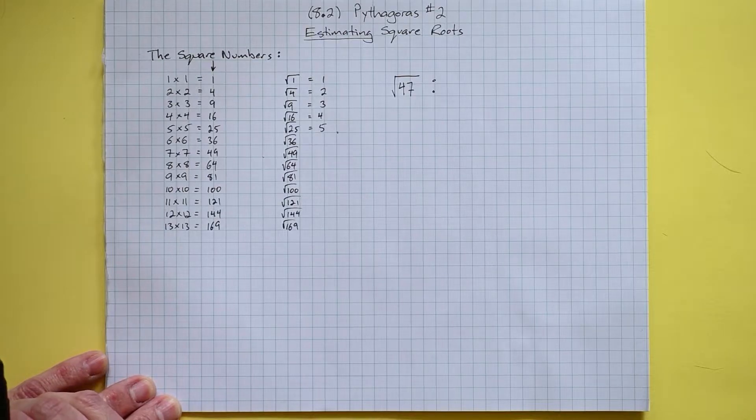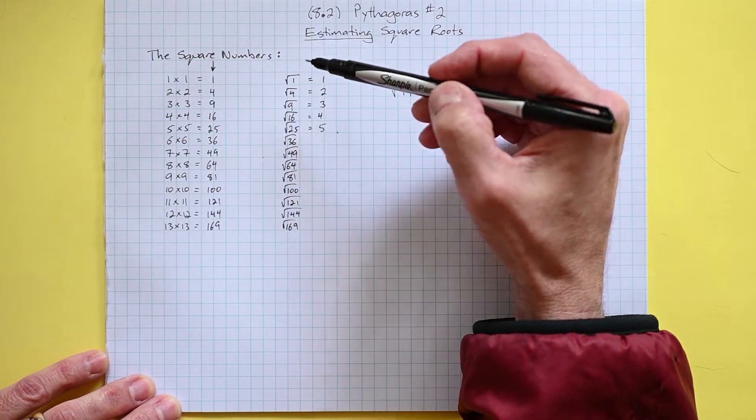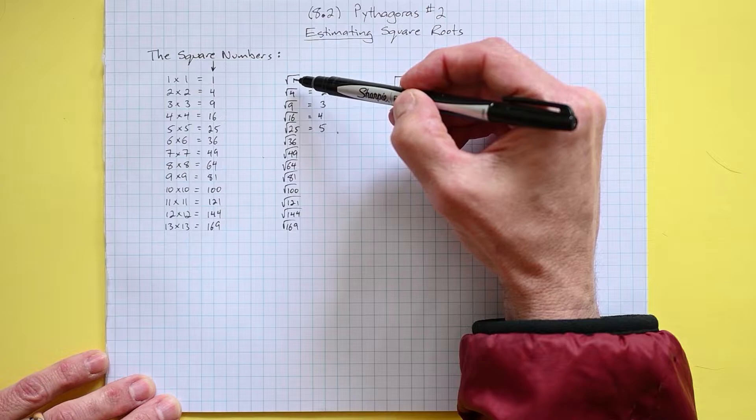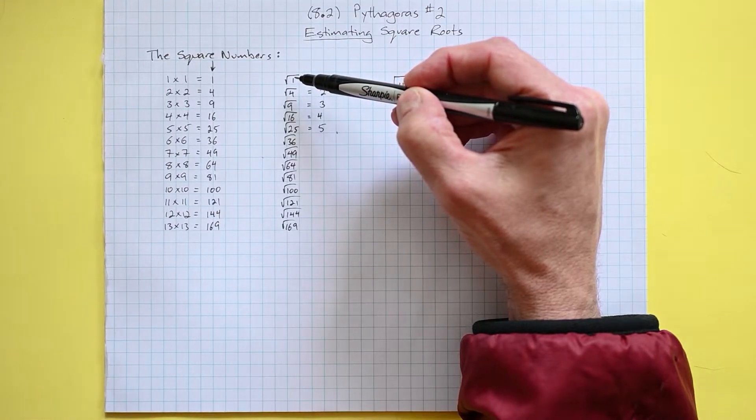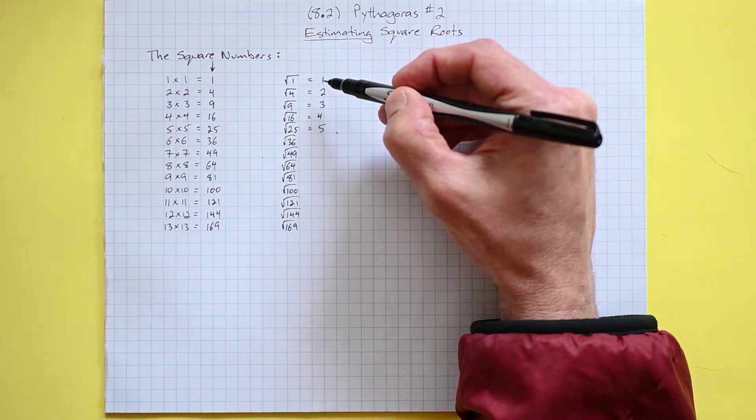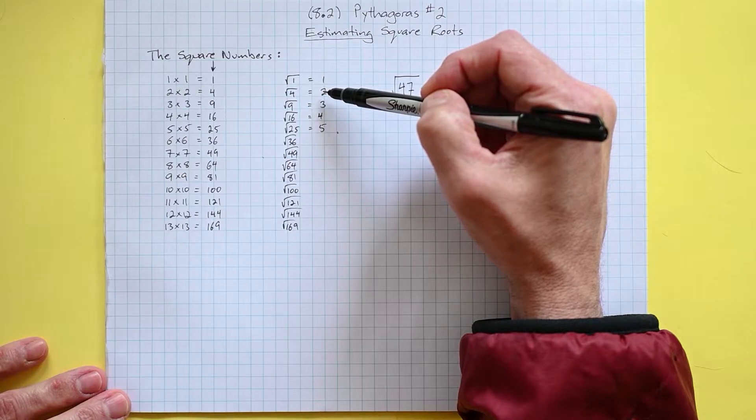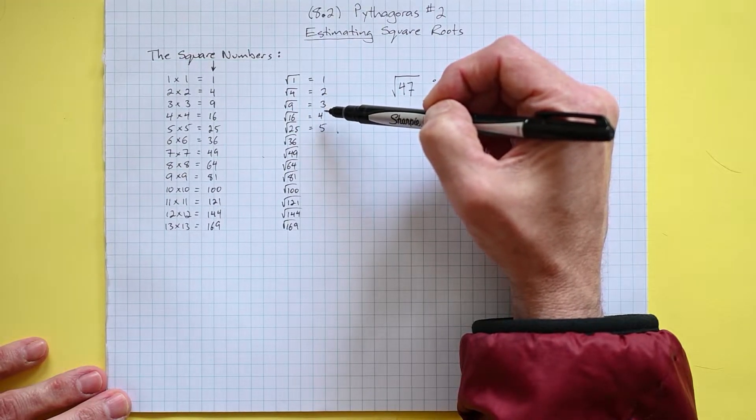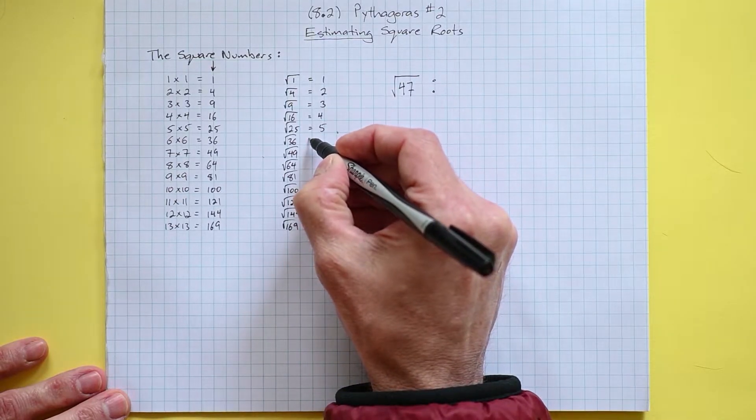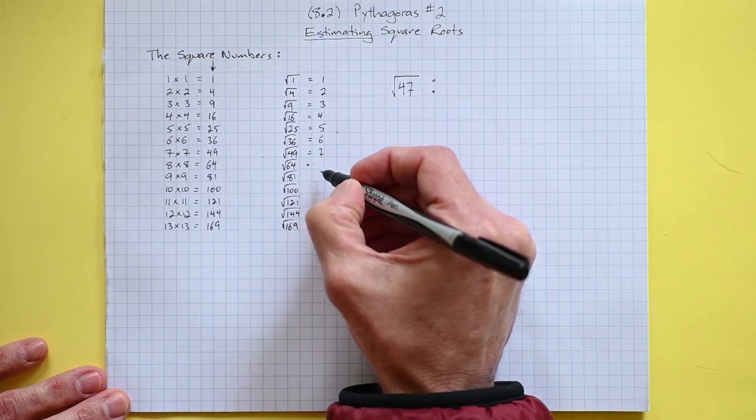What's unique about square numbers is they are the only numbers that have a whole number square root. So let's find out the square roots of our square numbers. To find the square root of 1, we're looking for a number we can multiply by itself that results in 1, and that of course is 1. For 4, a number times itself to give 4, that would be 2.